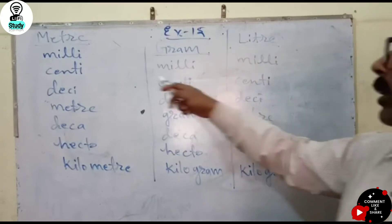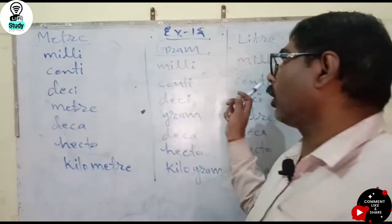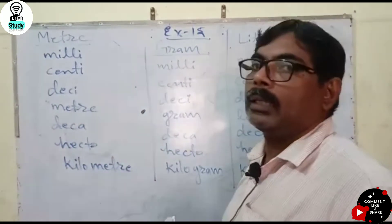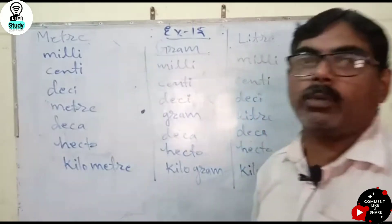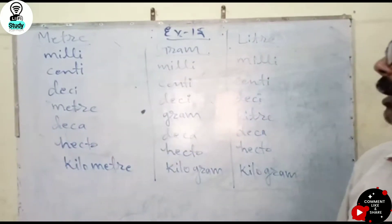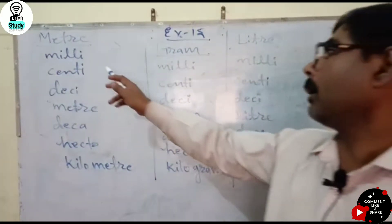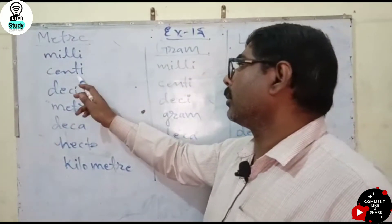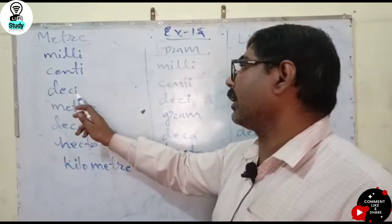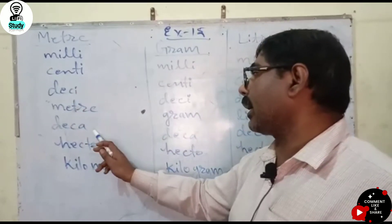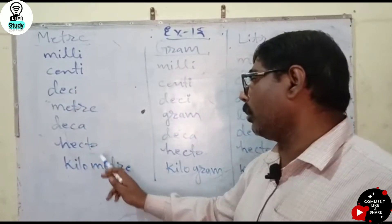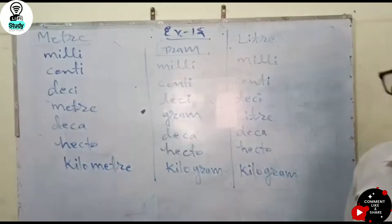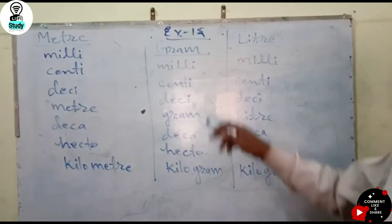Children, here are three columns given. Units of Length: the smallest unit of length is Millimeter, then Centimeter, Decimeter, Meter, Decameter, Hectometer, and Kilometer.